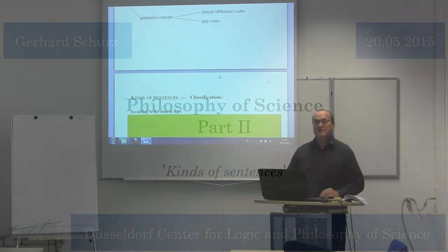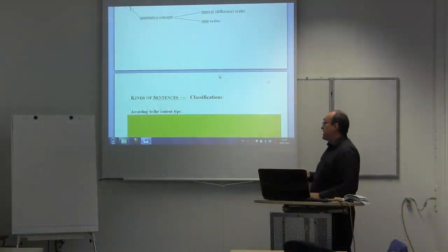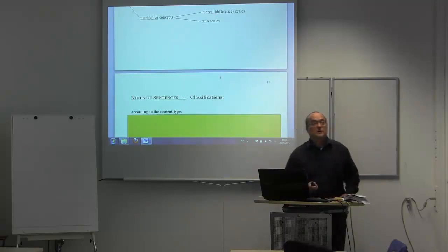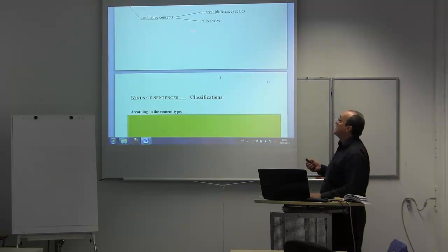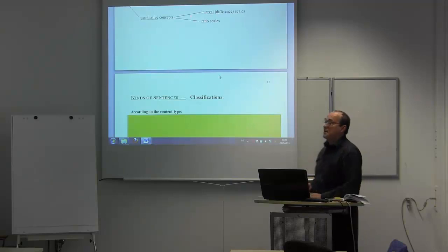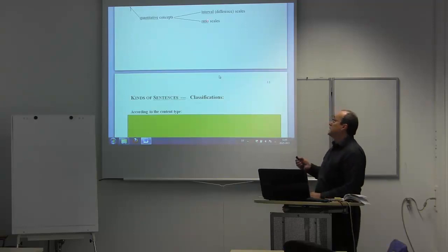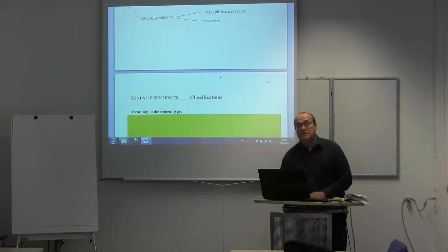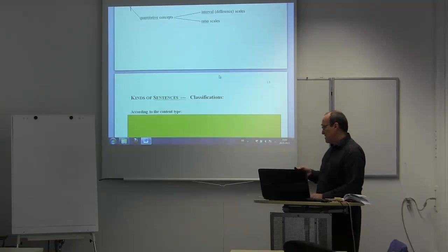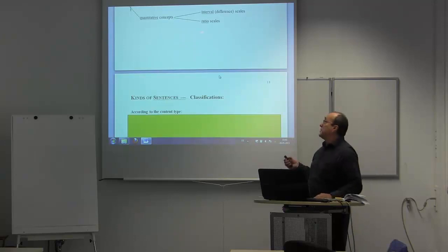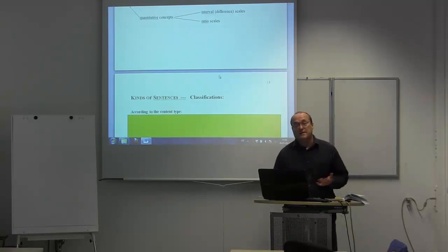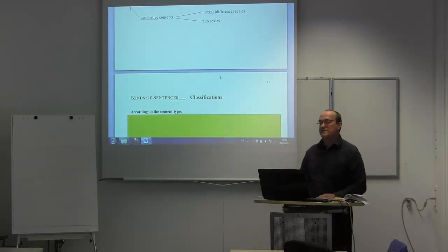Welcome to the lecture in philosophy of science. Last lecture I ended with an explanation of concepts classified according to their gradation or scale type. I spoke about quantitative concepts and explained the difference between interval scale and ratio scale. In ratio scales there is just a choice of the unit chosen by pure convention — for instance, mass as a ratio scale with kilogram as its unit — but there is an objective zero point.